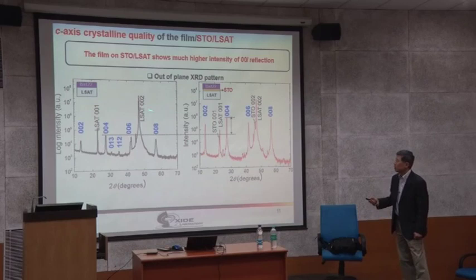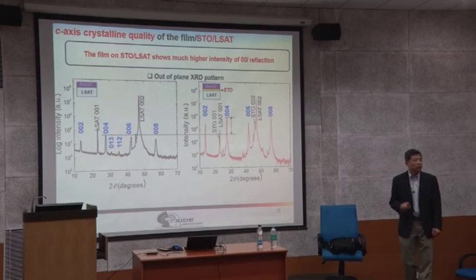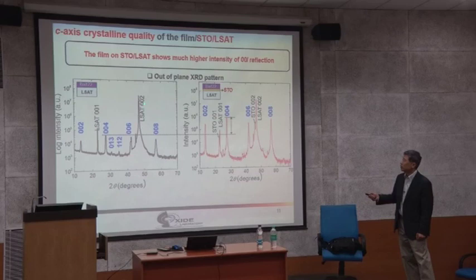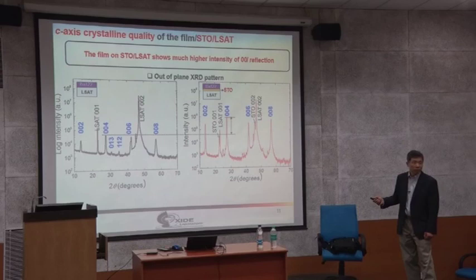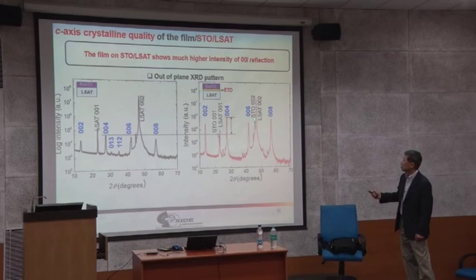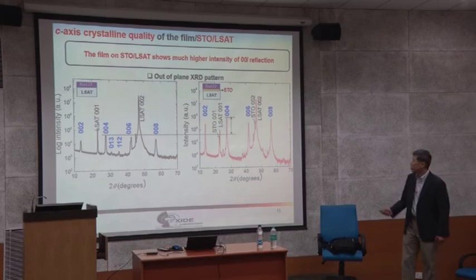We grow on two different substrates: one without any template layer — directly Ba122 — and one with a strontium titanate template layer, then Ba122 on top. Just a very thin layer of strontium titanate. When you see the X-ray diffraction — you now understand X-ray diffraction quite well — the strongest peak in X-ray diffraction of this kind of thin film is the substrate peak, which is very strong, like more than 10 million counts per second. You have the LSAT substrate 002 peak, and the strontium titanate peak.